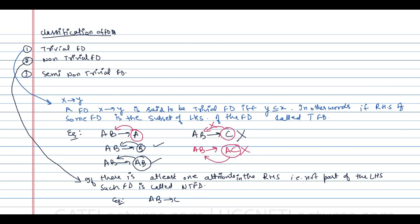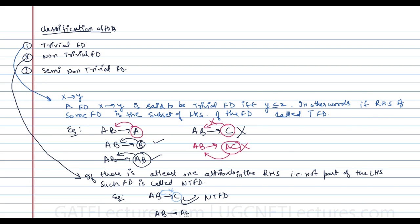For example, AB determines C — the right-hand side is not a subset of the left-hand side, therefore it is a non-trivial functional dependency. AB determines AC is also non-trivial because C is not part of the left-hand side. AB determines A is not non-trivial — it is trivial. AB determines CD is also a non-trivial functional dependency.